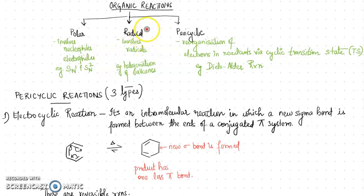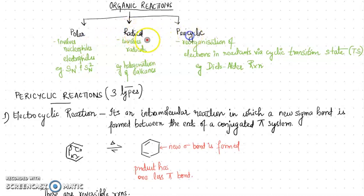Today we are going to look into another very important topic in your syllabus — pericyclic reactions. This is one category of reaction that comes under organic chemistry. So far, if we try to look at what reactions you have learned, you'll find three categories that you might have come across: the polar, the radical, and the new one — pericyclic reactions.